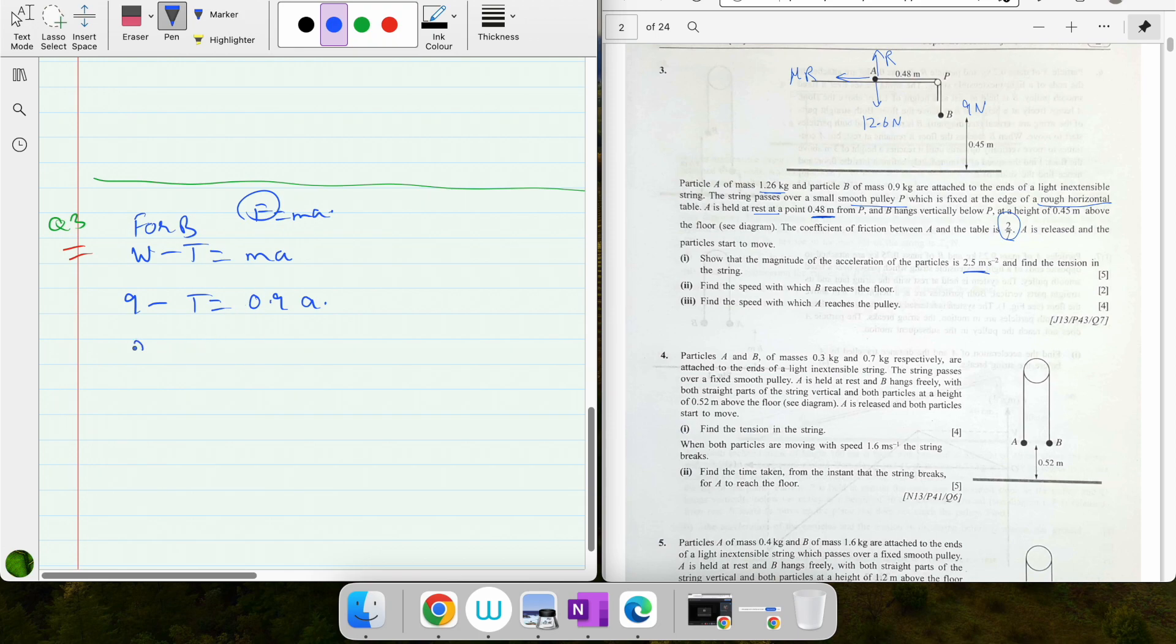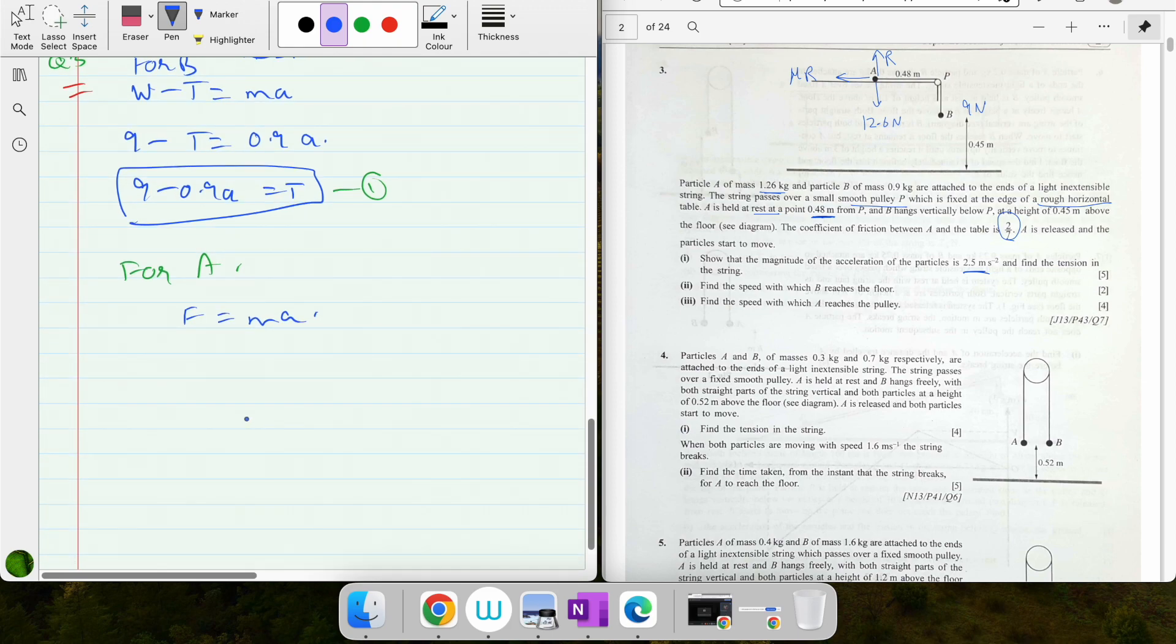Making T the subject: 9 minus 0.9a equals T. Let this be equation 1. Now write the equation for A. For A, horizontal force F equals ma. It's moving towards the right hand side, so the forward force is tension minus the resistive force which is only the frictional force, equals ma.